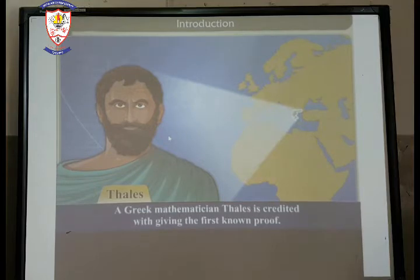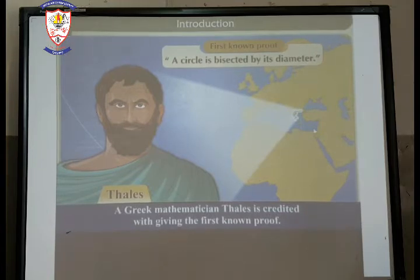A Greek mathematician Thales is credited with giving the first known proof. The first known proof which is given by Thales was a circle is bisected by its diameter.